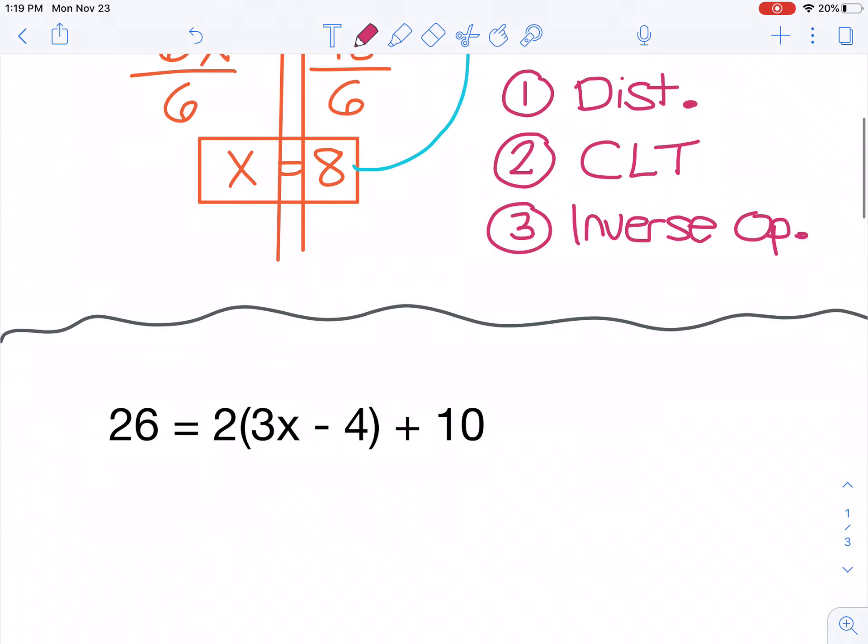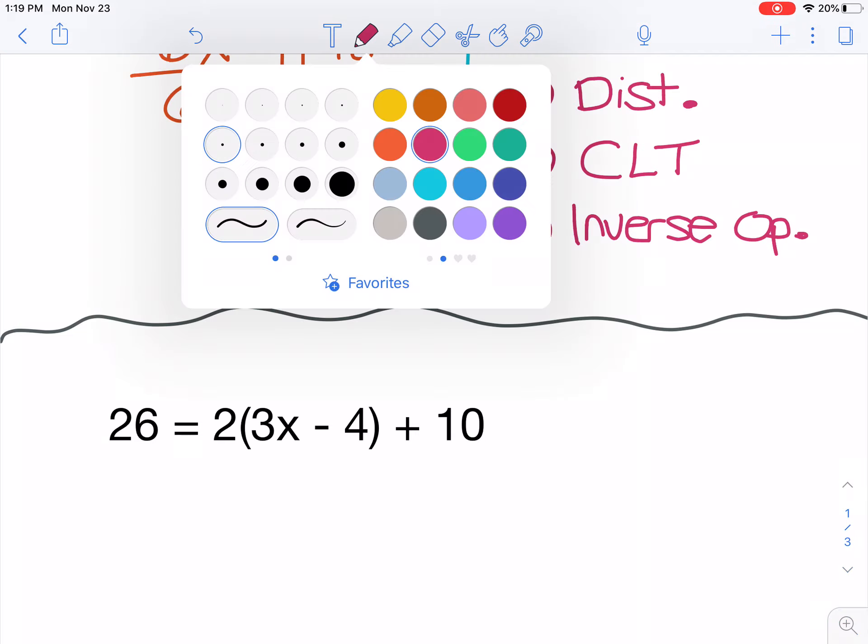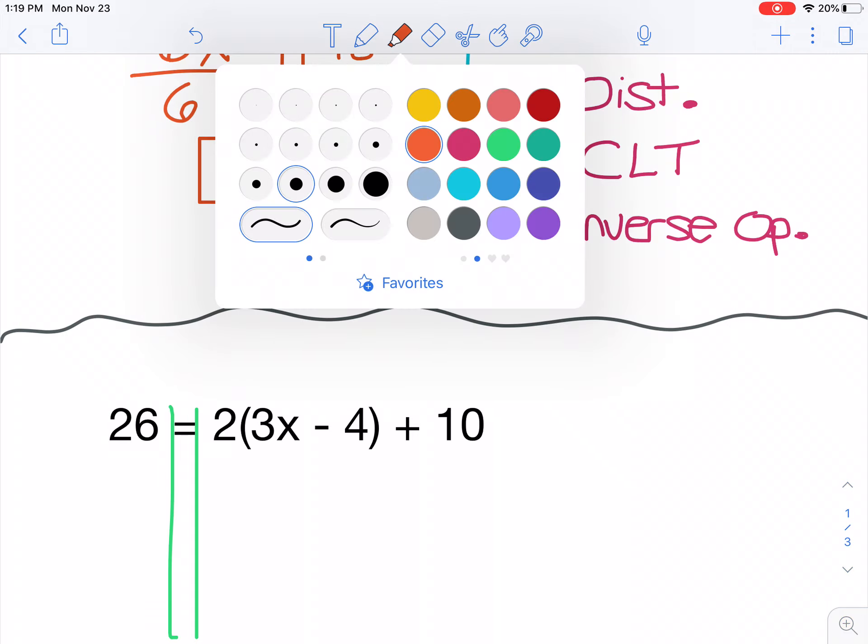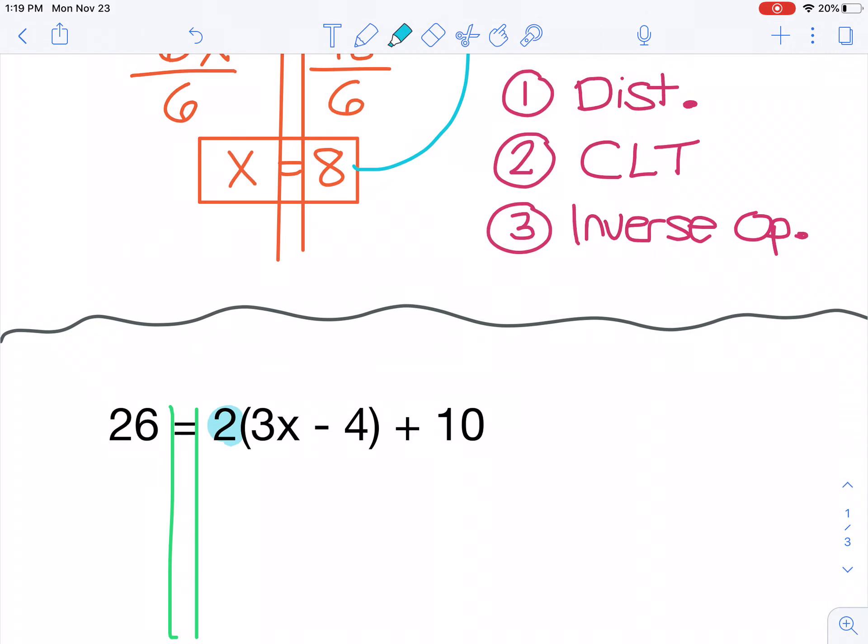So here's your next problem. This is the problem that's on your worksheet for today. I would like you to pause the video and try this one on your own. If you need a little help getting started, I'll get you set up. First thing I'm going to do is get my train tracks ready around my equal sign. And I see parenthesis, so I know that the first thing I need to do is distribute this value of 2. I need to multiply it by the 3x term and by the negative 4 term. I'm not going to multiply it by 10 because that's not inside my parenthesis. So you pause the video, give that a try, and then push play when you have a value of x ready to check.